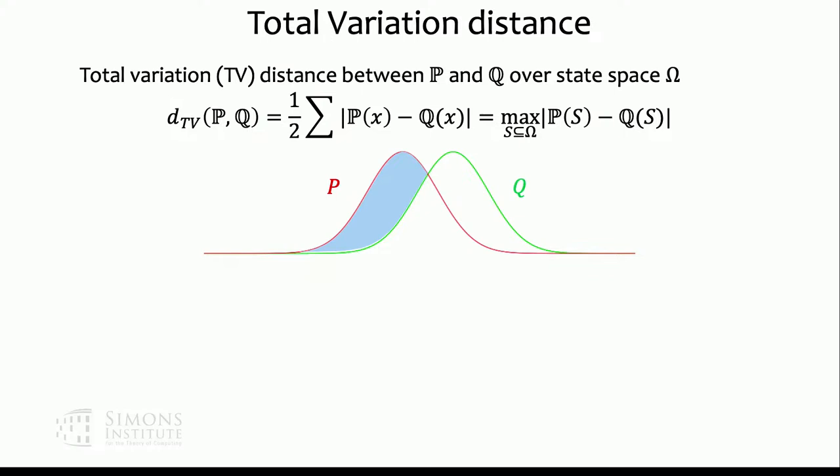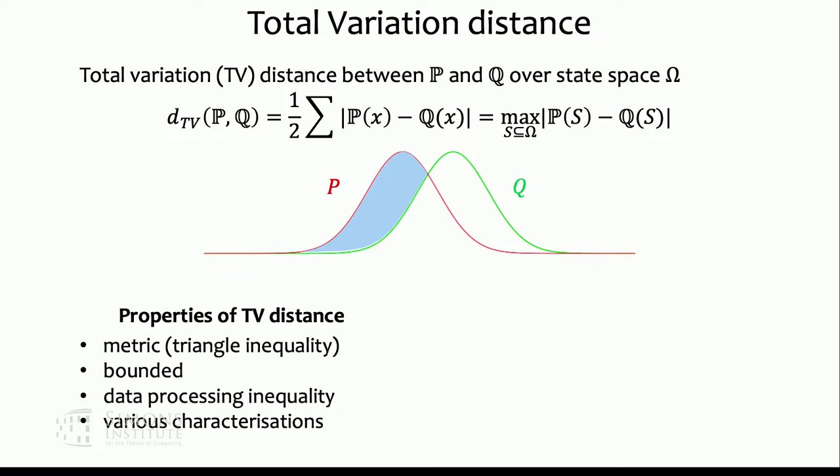Just to give intuition, the total variation distance is roughly the area of the region which is the probability that is in p but not in q. This area equals the other region by symmetry. Total variation distance has many good properties — for example, it is a metric, and it can be characterized in different ways, giving us many different ways to analyze the TV distance between two distributions.